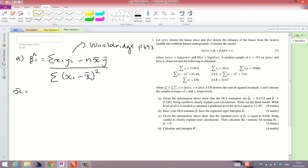X bar equals, as you know, the sum of x i over N. The sum of x i is 3158.6. N, our sample size is 321. So our mean for x is roughly 9.84.